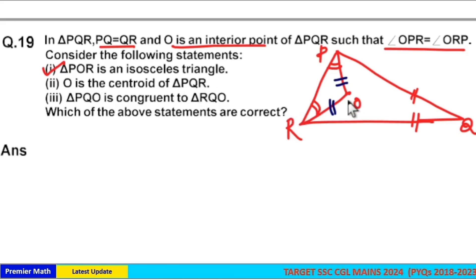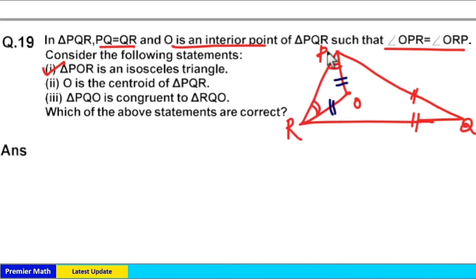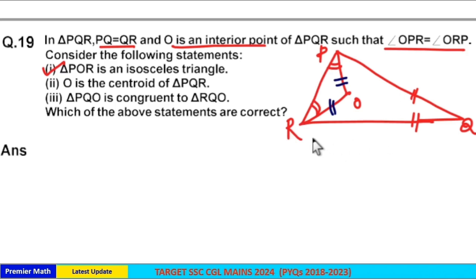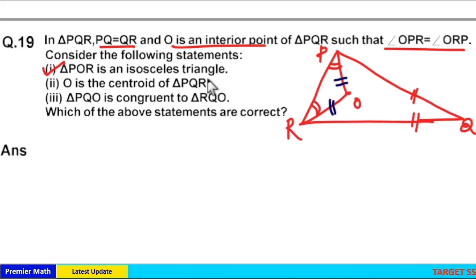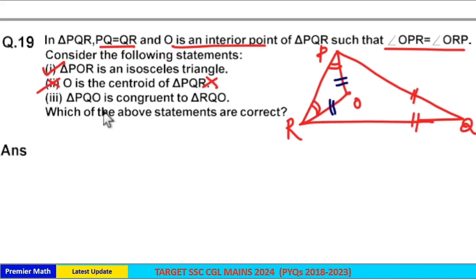We cannot confirm statement two because we don't know the length of PR. Only if PQR is an equilateral triangle would O be the centroid, but that cannot be confirmed here. So statement two is wrong.